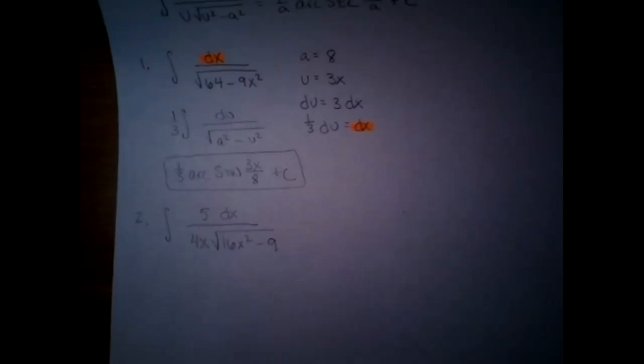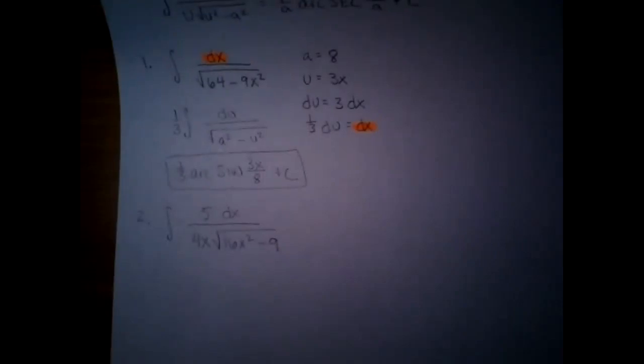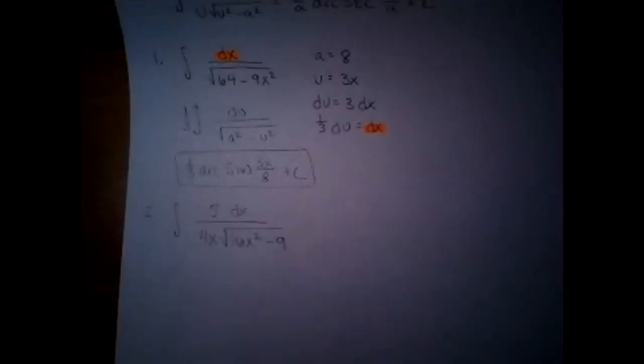So before I even start writing anything down — is it going to be arc sine, tangent, or secant? Just by looking at what's there, we have a root, and we have this little extra thing out front. Arc secant. So you already know which one it's going to be. And if you totally lost your marbles, if you write something with an arc secant in it, you made a good guess.